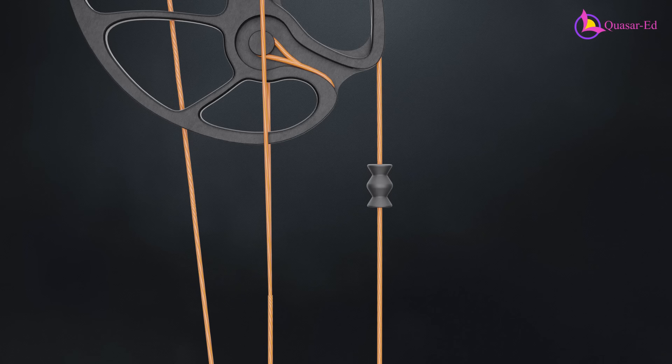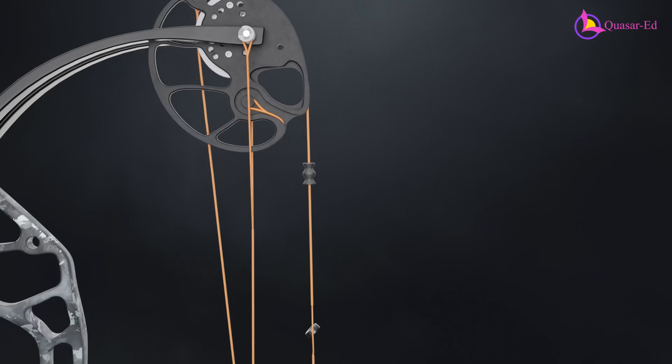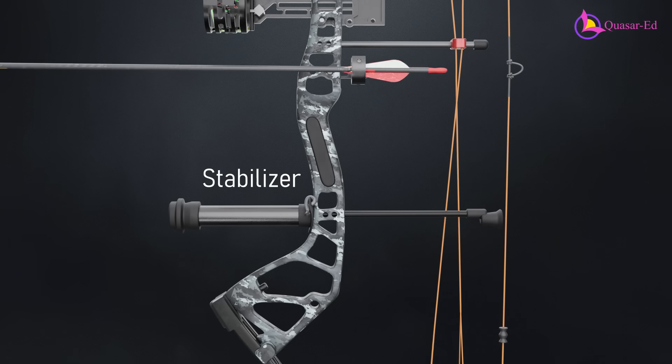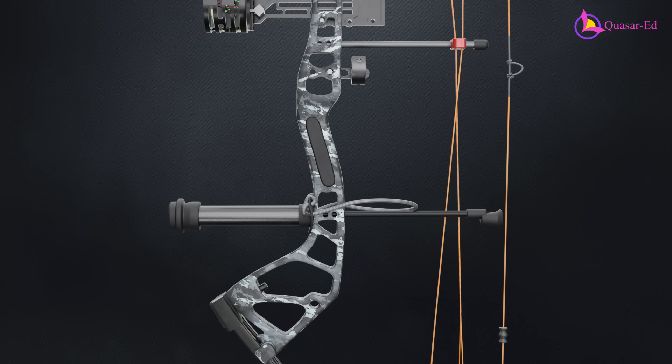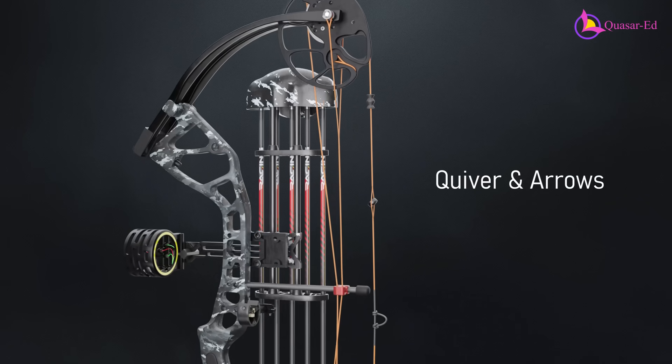Additionally, small rubber-like objects called string silencers are attached to the cables and strings, helping stabilize their motion and further reducing noise. To enhance stability, a counterweight called a stabilizer is often mounted at the bottom of the riser. This reduces vibration when the arrow is released, making for a smoother and more controlled shot. Finally, the quiver can also be attached onto the riser.